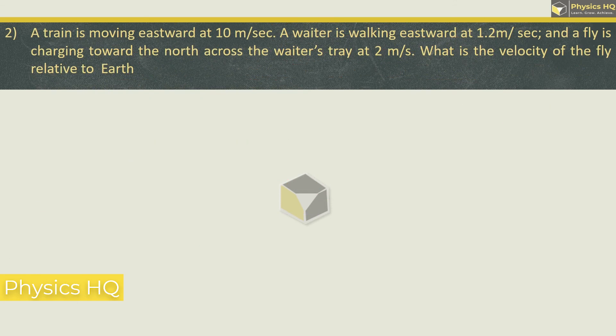Next problem: A train is moving eastward at 10 meter per second, a waiter is also walking eastward at 1.2 meter per second, and a fly is charging towards the north across the waiter's tray at 2 meter per second. What is the velocity of the fly relative to earth? This is the vector representing the train speed which is eastward 10 meter per second, then the waiter is also eastward at 1.2, giving a total vector of 11.2 eastward. Now a fly is charging towards the north, we draw this to the north, and its magnitude is 2.